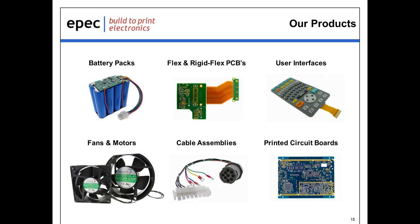Thank you, Jim. I just want to take one minute while Jim reviews the technical questions to give everyone who may not be familiar with Epic an overview of our products. Epic focuses on custom build-to-print electronic products where we add significant value-add engineering resources. Our core product lines include custom battery packs, flex and rigid flex printed circuit boards, user interfaces as we've been discussing, fans and motors, high-end cable assemblies, and our original business — rigid printed circuit boards.